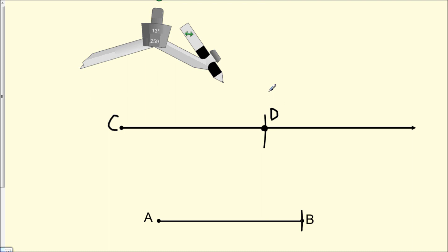And now since the length of the compass was set to be equal to the length of line segment AB, we can conclude that line segment AB is congruent to line segment CD.